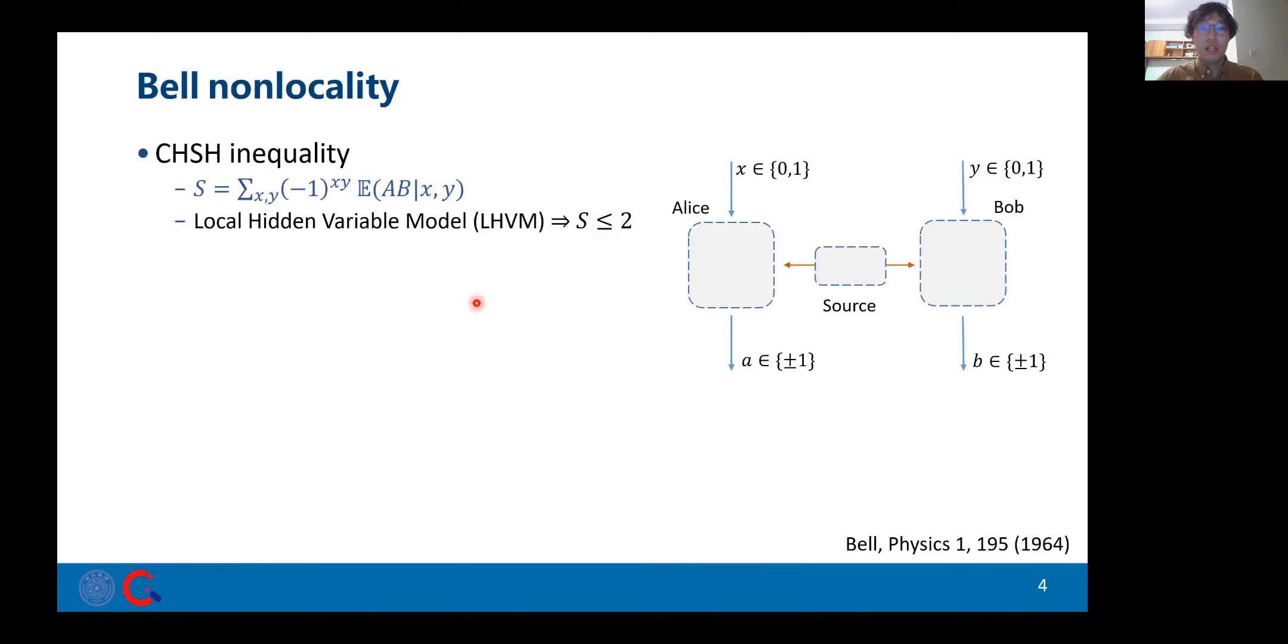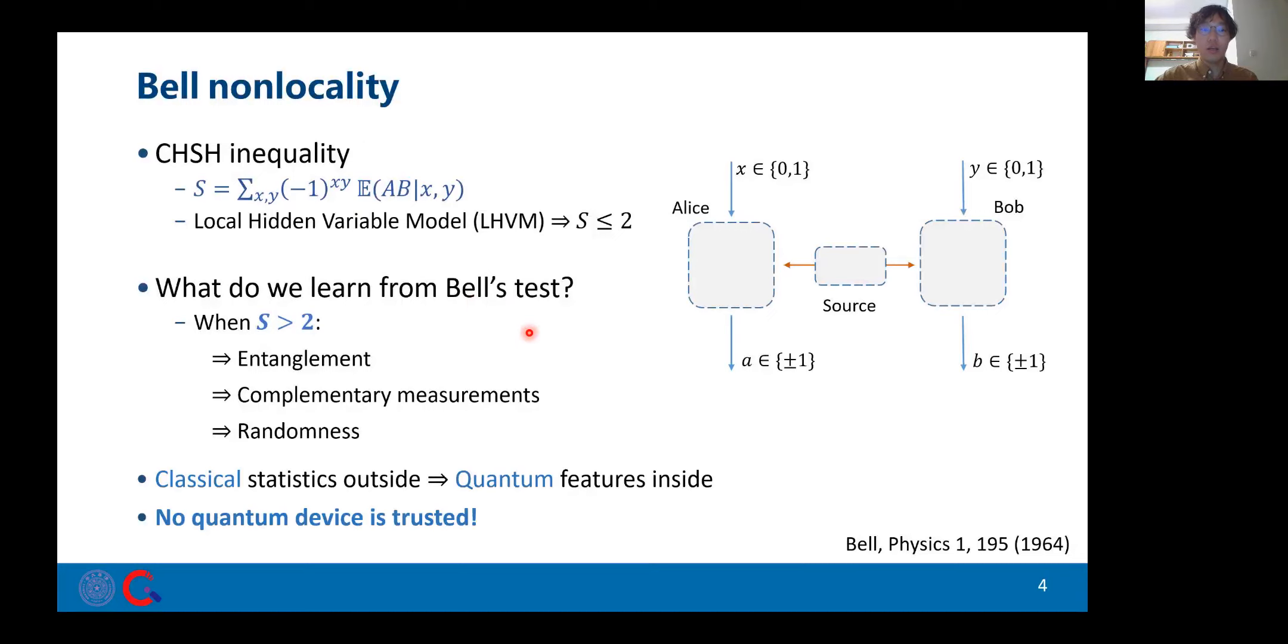As we all know, quantum nonlocality is our most novel feature that distinguishes quantum theory from its classical alternative. As shown by Bell tests, we have known that our world is not ruled by the local hidden variables. And going one step further, a Bell inequality violation tells us many things. In brief, we can self-test quantum behavior inside devices without trusting them in prior.